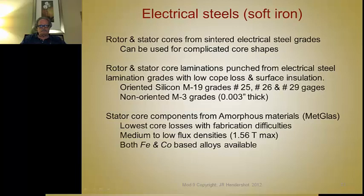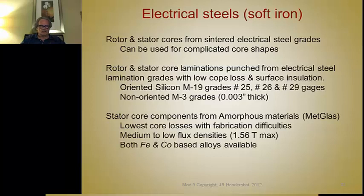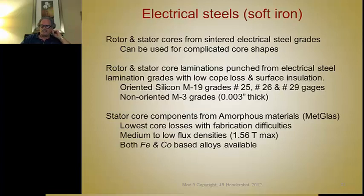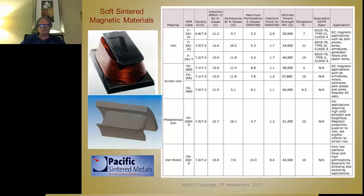There's also a class of amorphous materials with the trade name Metglas. These have very low core losses but their maximum flux density is quite low — they run around 1.5 tesla instead of 2.0 to 2.1 tesla like the other grades.